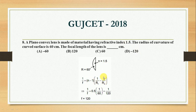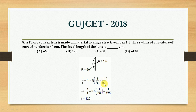Here mu is 1.5, so 1.5 minus 1 equals 0.5. The curved surface gives r1 equal to 60 cm. The second surface is flat, so its radius of curvature is infinity, meaning 1 over r2 equals zero. Our formula becomes 1 over f equals 0.5 times 1 over 60. Solving this, the focal length equals 120 cm. The correct answer is B, that is 120 cm.